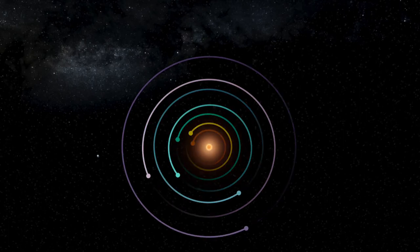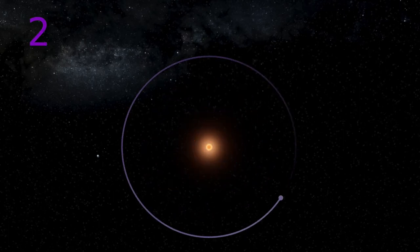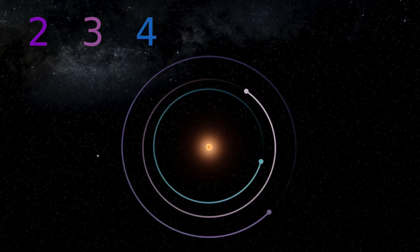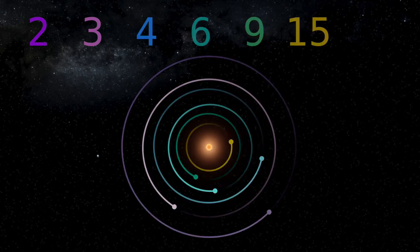It turns out that for every two orbits of the outermost planet, the next one in does three, the next one in four, then six, nine, fifteen, and twenty-four.